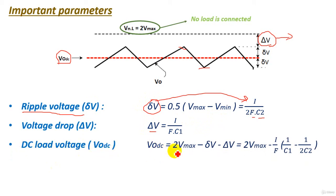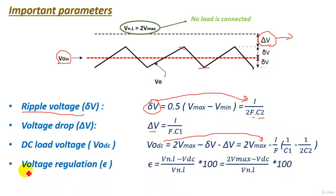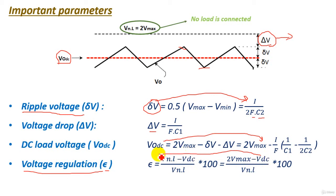The DC output voltage is calculated as: V_dc = 2·V_maximum − 1/(f·C1) − 1/(2f·C2). We also have voltage regulation, ε, defined as: ε = (V_no-load − V_dc) / V_no-load × 100%. It measures the total drop in the circuit as a percentage — accounting for both the voltage drop ΔV and the ripple voltage. V_no-load is 2·V_maximum, and V_dc is calculated from the formula above.